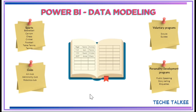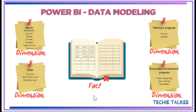In a nutshell, sports, clubs, voluntary programs and the personality development programs are the four different dimensions that the school is looking at. And based on the registrations, a fact record is created with the student activity mapping. So in this example, this register is going to be the fact table and the dimensions are the sports table, the clubs table, voluntary programs and the personality development programs.